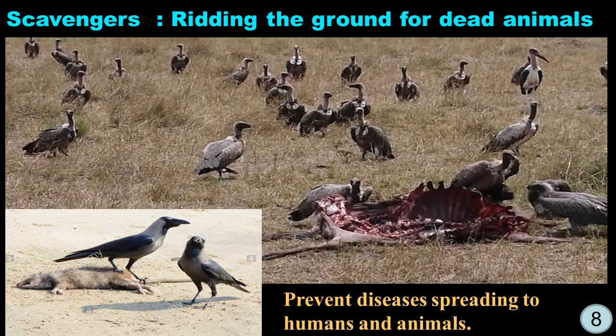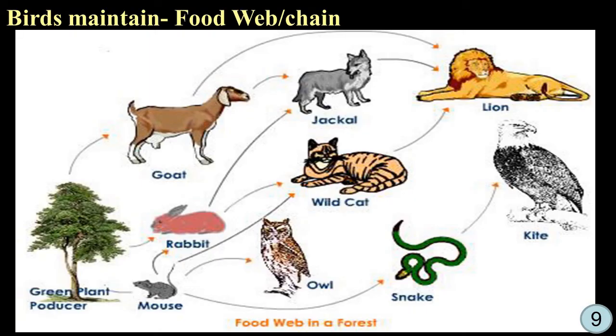Scavenging birds like vultures and crows usually rid the ground of dead animals, whereby they prevent diseases from spreading from one place to another, even to human beings. Many birds maintain the food web and food chain, enabling the balance of ecosystems.